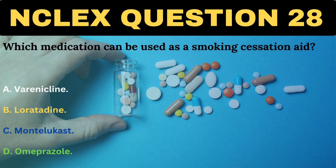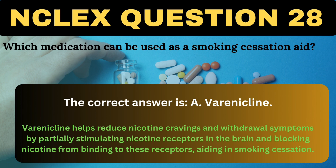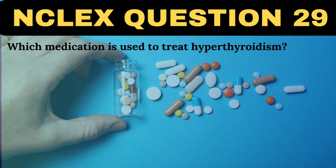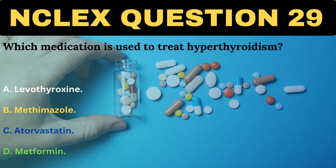Which medication can be used as a smoking cessation aid? A. Varenicline. B. Loratadine. C. Montelukast. D. Omeprazole. The correct answer is A, Varenicline. Varenicline helps reduce nicotine cravings and withdrawal symptoms by partially stimulating nicotine receptors in the brain and blocking nicotine from binding to these receptors, aiding in smoking cessation.